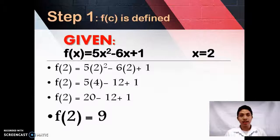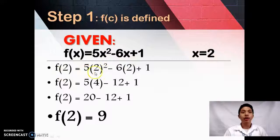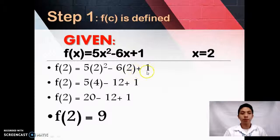Next, in step 1, we have this equation: f(x) = 5x² - 6x + 1 and the value of our x will be 2. Let's make it easier. f(2) = 5(2)² - 6(2) + 1. The final answer will be f(2) = 9.